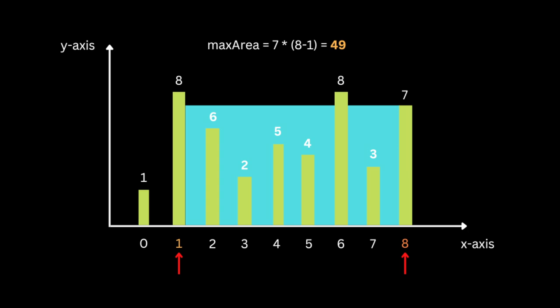Then we're going to compress the base of our container and recalculate the area again. So either move the left pointer to the next height or the right pointer to the previous height. We move the smaller value between the value that the left pointer is pointing to and also the right.